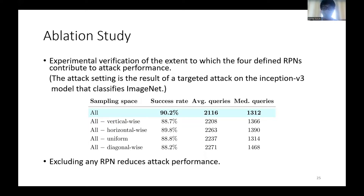We compared the attack performance when each of the four RPNs was excluded from the attack. In the table, for example, 'all minus vertical' refers to three types of RPNs excluding the vertical pattern from the four. The attack setting is a targeted attack on the Inception V3 model classifying ImageNet. We found that excluding any RPN lowers attack performance, experimentally justifying the contribution of each RPN to the attack success rate.